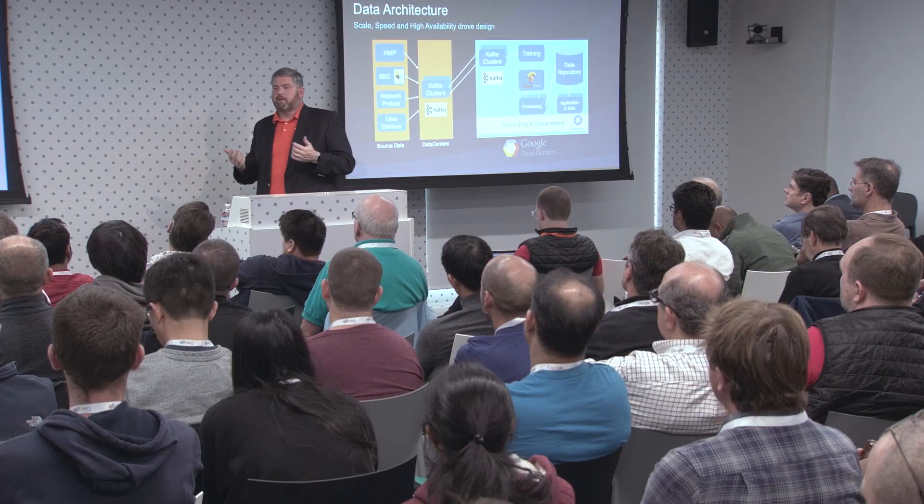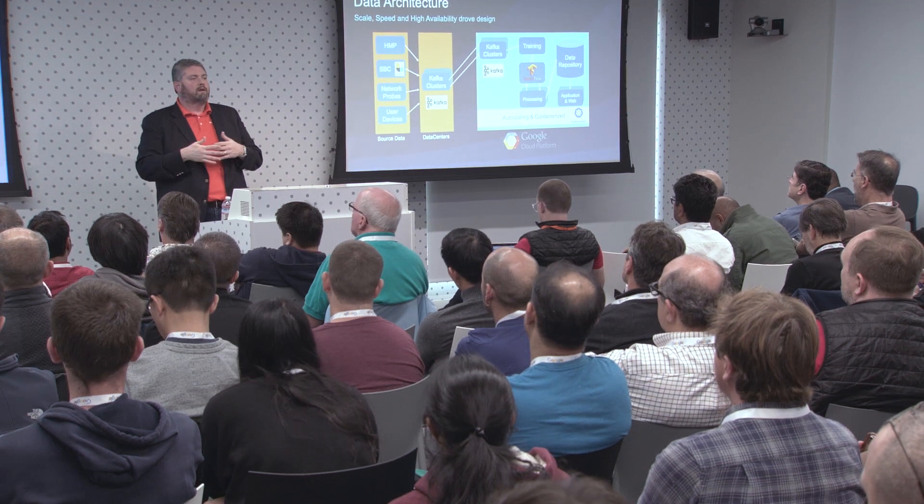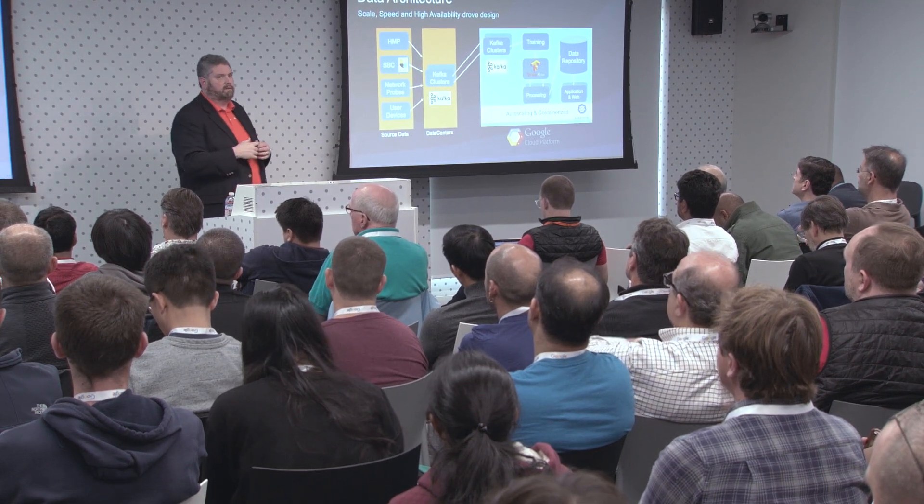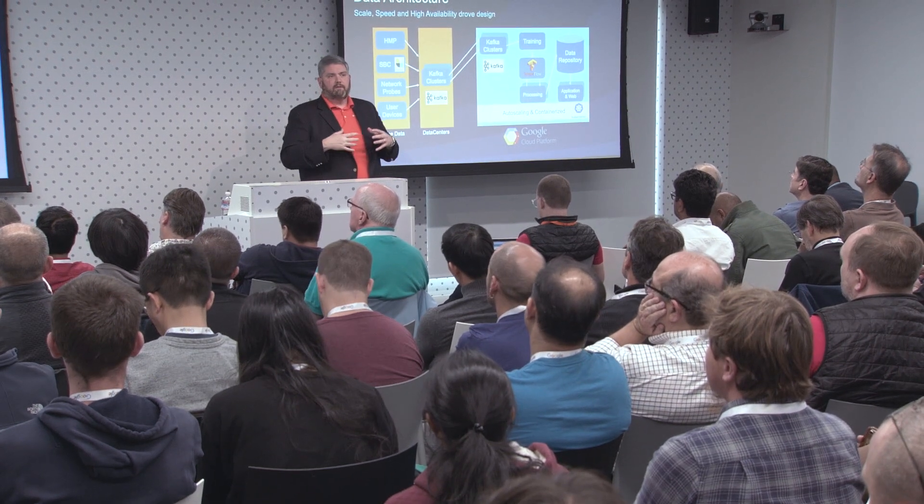First, we mirror the data inside the Kafka clusters into Google Cloud infrastructure. We have an algorithm for picking a training call set, train that through TensorFlow, and obtain a formula. We then take that same data and go straight into processing into the data repository. Our application and web servers are all in here because our call volumes fluctuate wildly — in North America between 11 and 1, we can have 100,000 to 200,000 records per second, and at 1 AM it might drop to 1,000-2,000. We need auto-scaling, governed through Kubernetes.